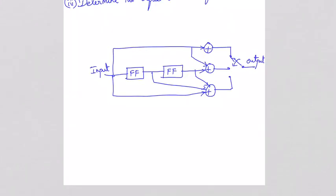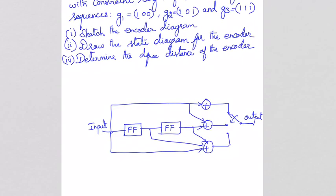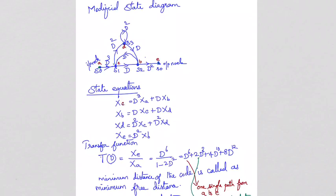Next, calculate the free distance, d_free. This is a key topic. We use a modified state diagram called the signal flow graph to find d_free. This is the d_free distance calculation method.